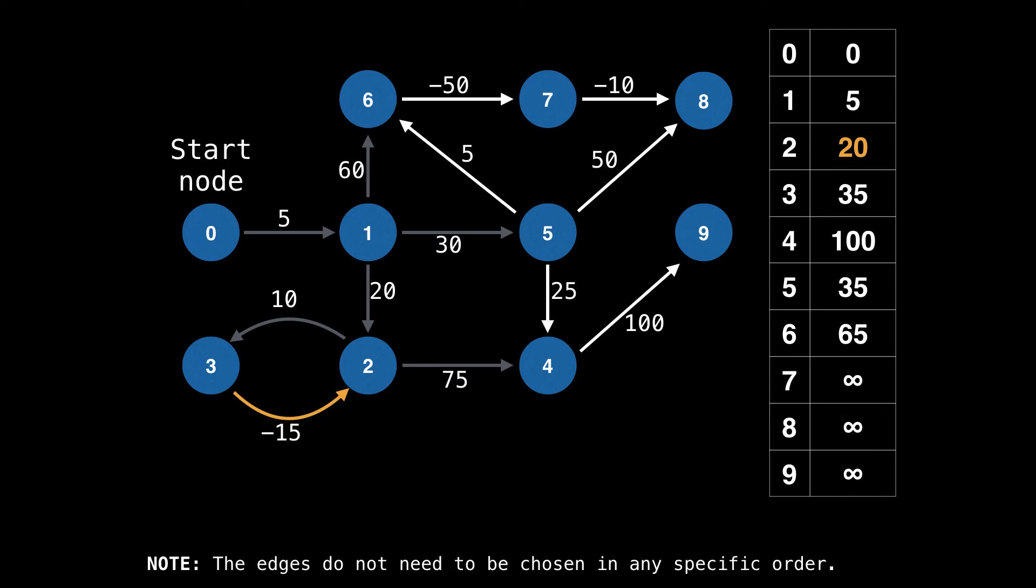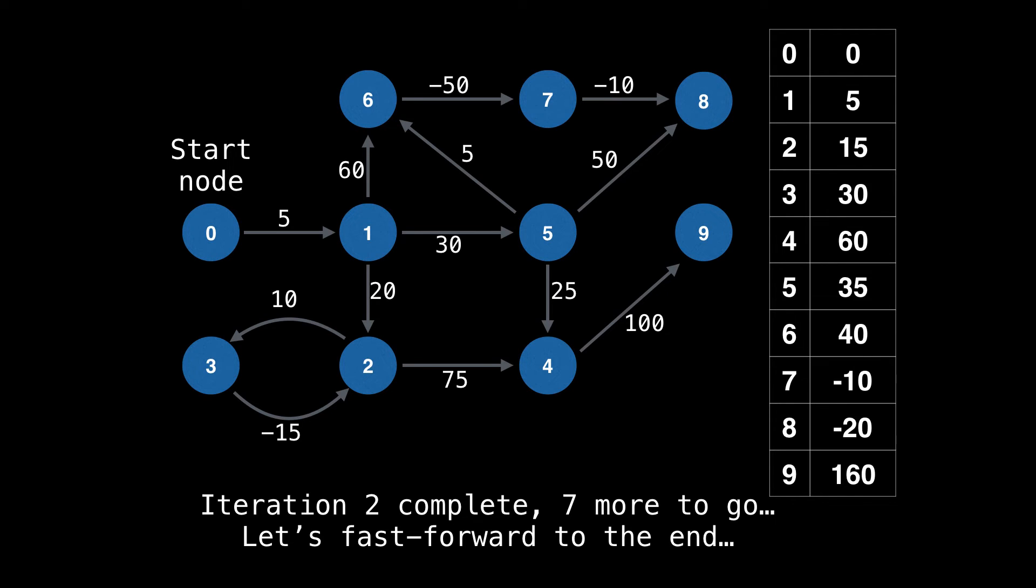So this is all the algorithm does: it processes each edge performing relaxation operations. I'll let the animation play for the rest of this iteration. So iteration one is over and there are eight more iterations to go. But for simplicity, I'll just play one more iteration to give you an idea of how the algorithm works. We reset all the edges and start processing the edges. Again, you'll notice that a lot less updating happens in the distance array this round, particularly because I unintentionally selected the edges to be processed in a more or less optimal way.